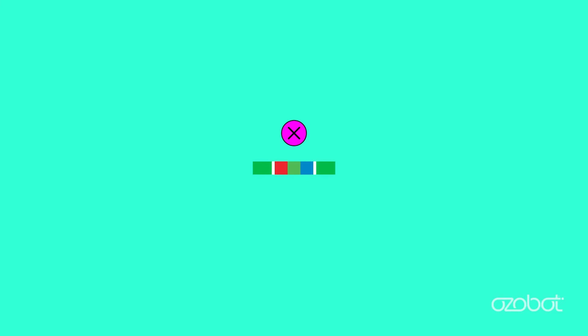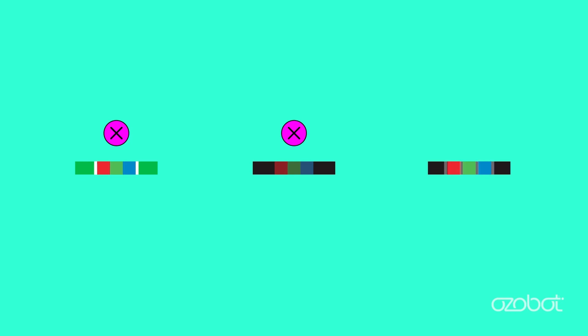If any of your color codes did not run correctly, you have a bug or an error. Check your pathways for common bugs: Are your color codes surrounded by solid black lines without any white spaces? Are the color blocks in the color codes too dark? Are there any extra white spaces between the colored blocks?